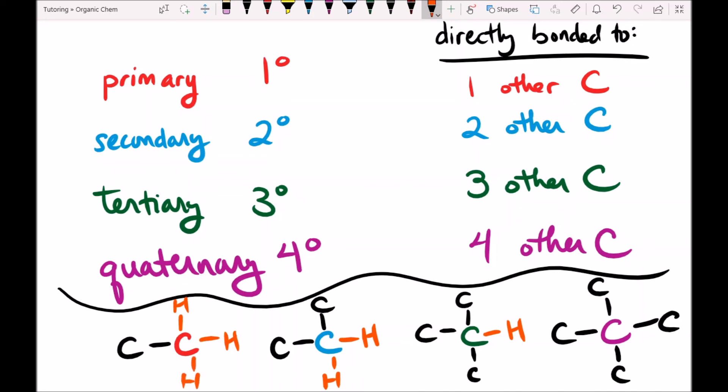Or it could have a double bond on the other side and another single bond. The important part is primary, one other carbon; secondary, two other carbons; tertiary, three other carbons; quaternary, four other carbons. It doesn't matter what other elements.